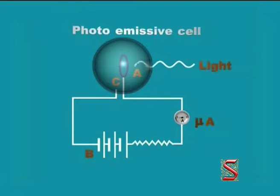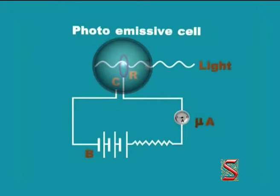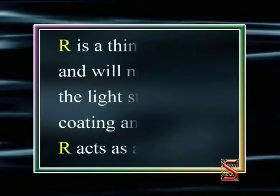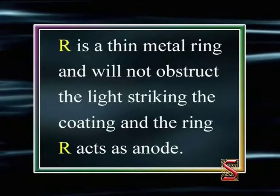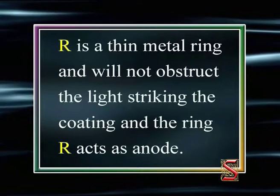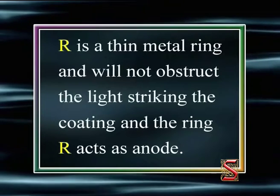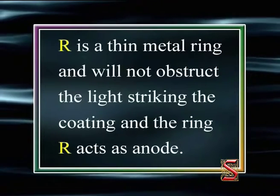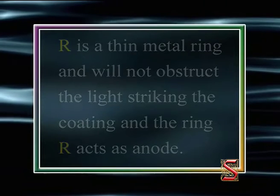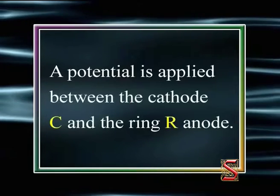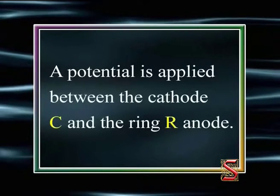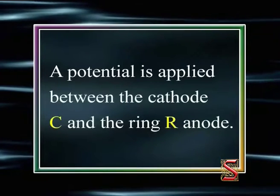This layer acts as the cathode, but a small portion is to be left uncoated to allow the light into the bulb. R is a thin metal ring and will not obstruct the light striking the coating, and the ring R acts as the anode. A potential is applied between the cathode C and the ring R, which is the anode.